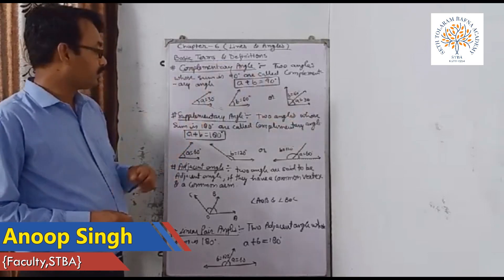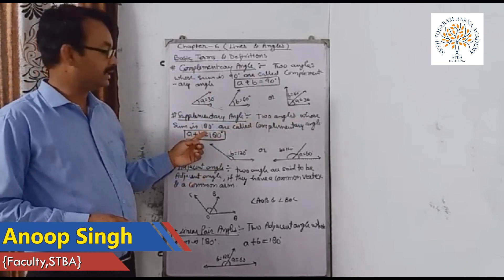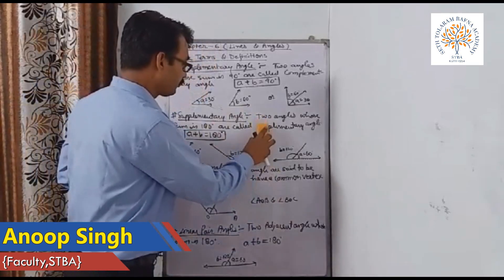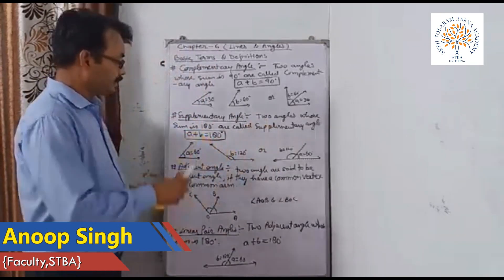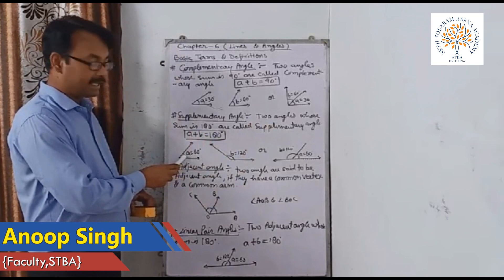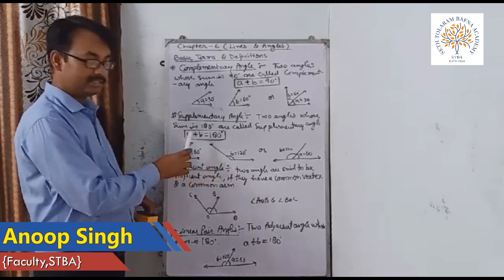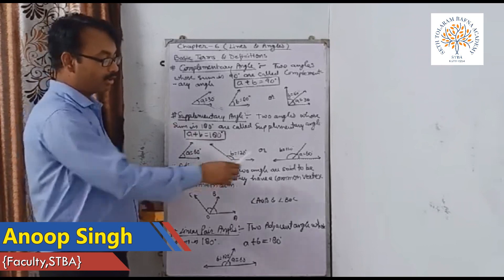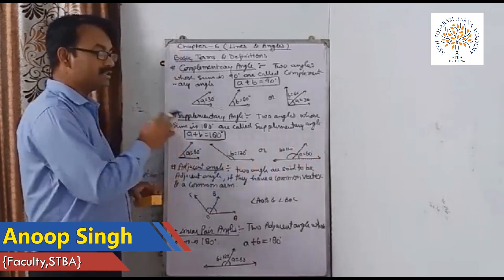A supplementary angle: two angles whose sum is equal to 180 degrees are called supplementary angles. For example, angle A plus angle B equals 180 degrees — if angle A is 60 degrees and angle B is 120 degrees, their sum is 180 degrees. If both angles are different or adjacent, we say they are supplementary angles.